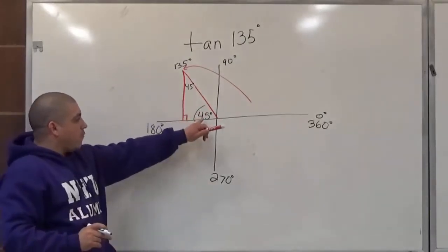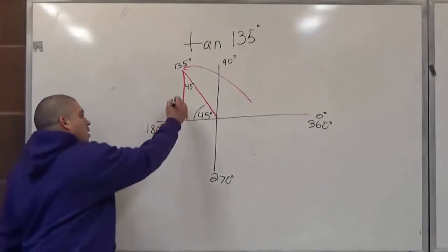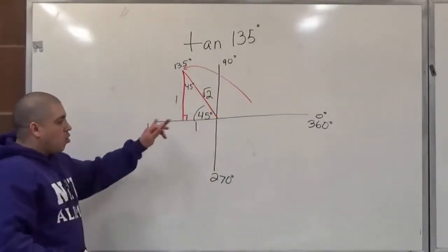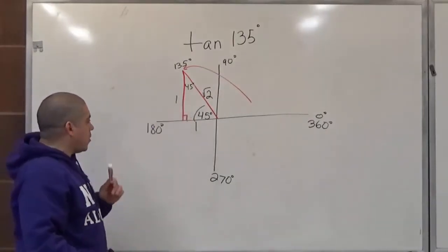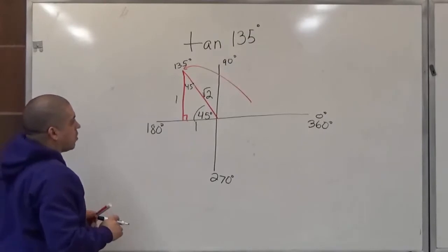So the 45, 45 degree triangle has sides associated with it, predetermined sides, which is 1, 1, root 2. These sides are always associated with the 45, 45 degree triangle. So we want to figure out tangent of 135 degrees.